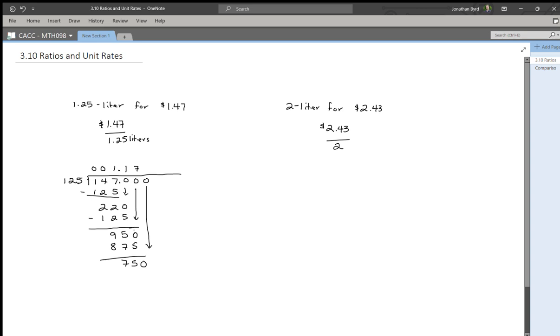950 minus 875 is 75, I believe. And then I'll bring down another zero. Okay, so this is good. So 750, 125 goes into 750 six times. Six times 125 is 750. So when we do this final subtraction, we get a zero. Okay, so the good news is that this divides evenly. So then our unit ratio or unit rate is 1.176. And that's really dollars per liter. So if you're buying a 1.25 liter soda at the Publix locally, at least this weekend, then the price would be $1.176 per liter.